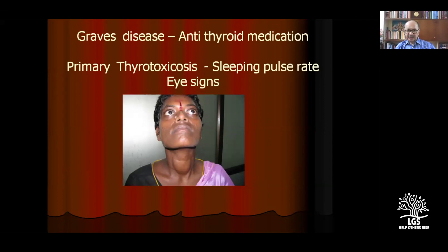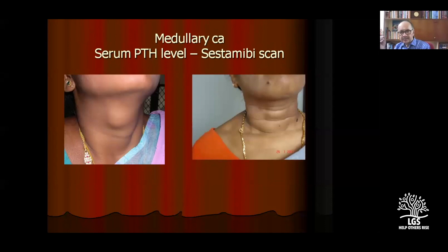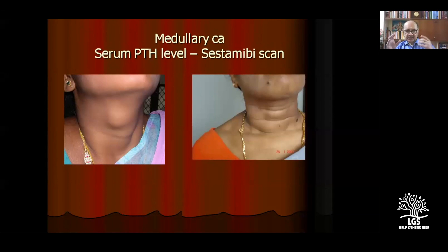Sleeping pulse rate is a very interesting story. When asked in the exam, the idea is that the patient must be sleeping, BMR must be reduced to a low level, and only then it is reliable. In practice, it is ordered in the ward for nursing staff to measure at 12 o'clock at night with the patient completely sleeping. But what often happens is the house surgeon wakes the patient, asks them to check the pulse, and records it — so the basal metabolic rate goes up and the sleeping pulse rate becomes unreliable.